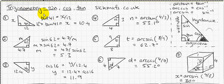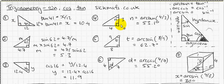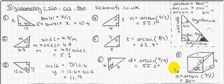This video is about trigonometry — how to use the sine, cos, or tan button on your calculator to work out missing sides or missing angles in right-angle triangles. This stuff here is going to tell you everything you need to know, and these are the kind of examples of using this.